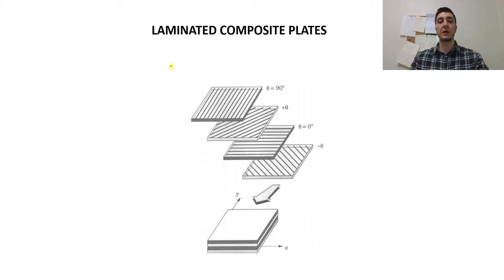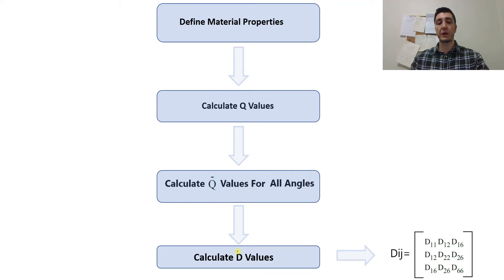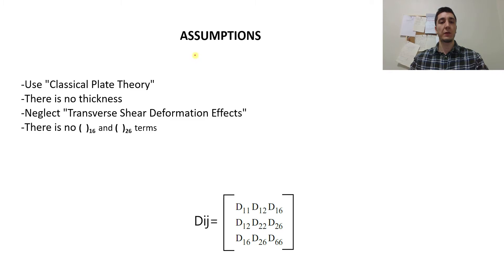So first of all, let's start with laminated composite plates. They are created by laminas, and these laminas can be oriented in different directions — for example, at 90 degrees, 0 degrees, or 45 degrees. If we stack them, we can have a laminated composite plate. Before we calculate the D-value, we need to define material properties, then calculate the Q-values, then the Q-bar values for all angles and plies, and finally we can calculate the D-values and have the D-matrix.